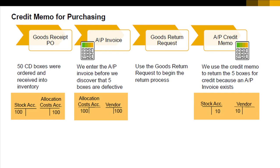We use the goods return request to begin the return process. Here we enter the reason for the return and any information from the vendor about how to return the product. Since the invoice had already been created, the system creates an AP credit memo from the goods return request.